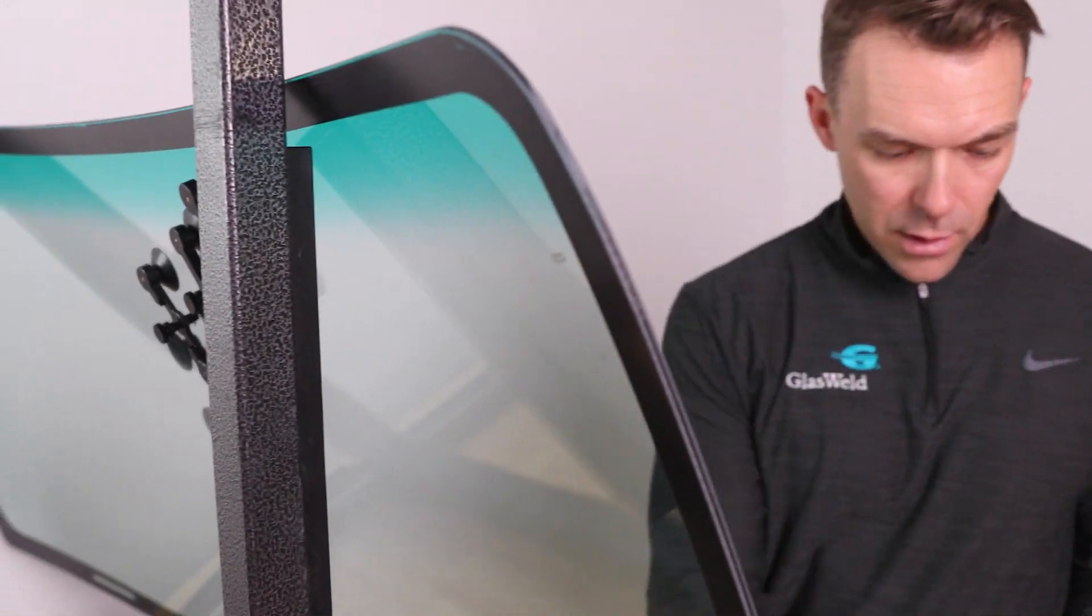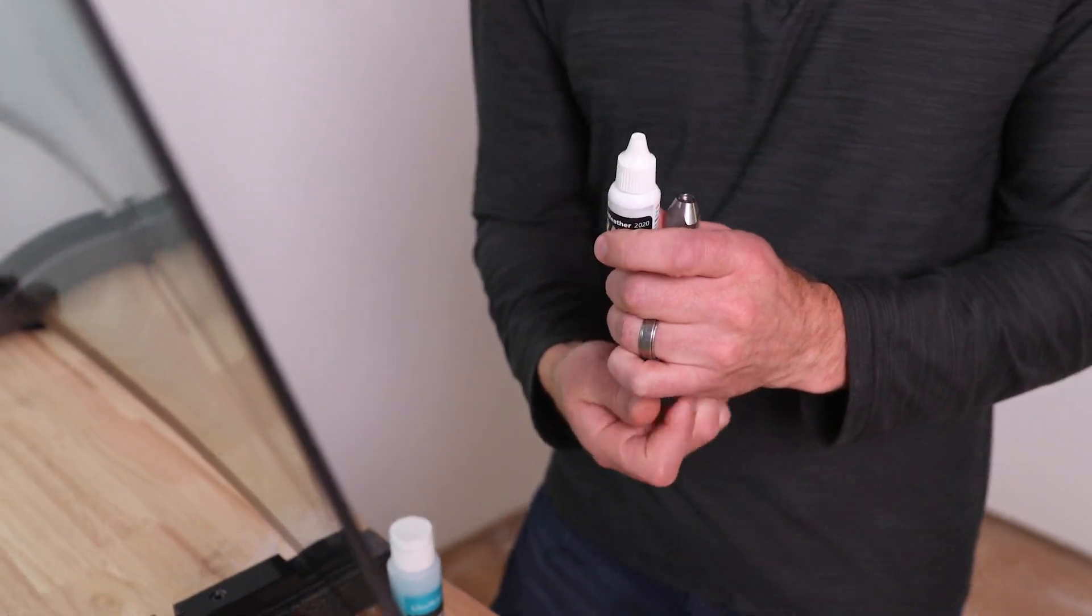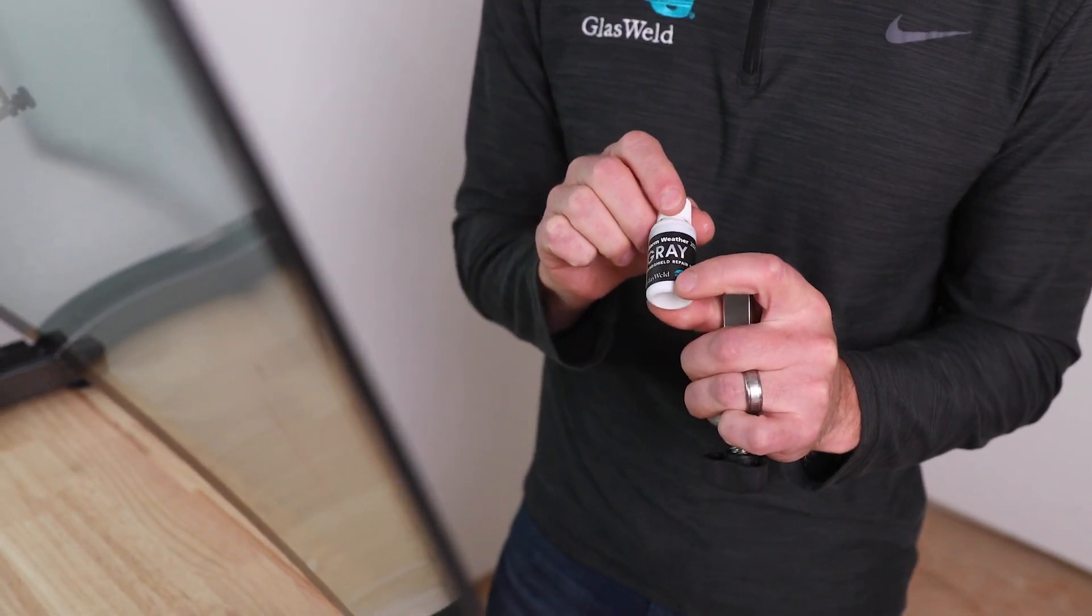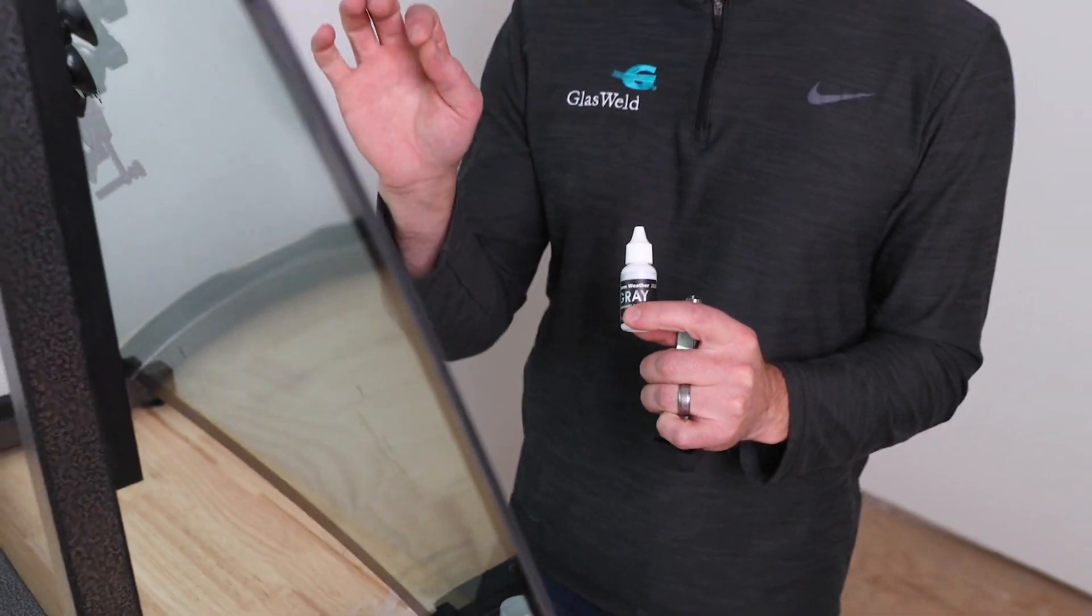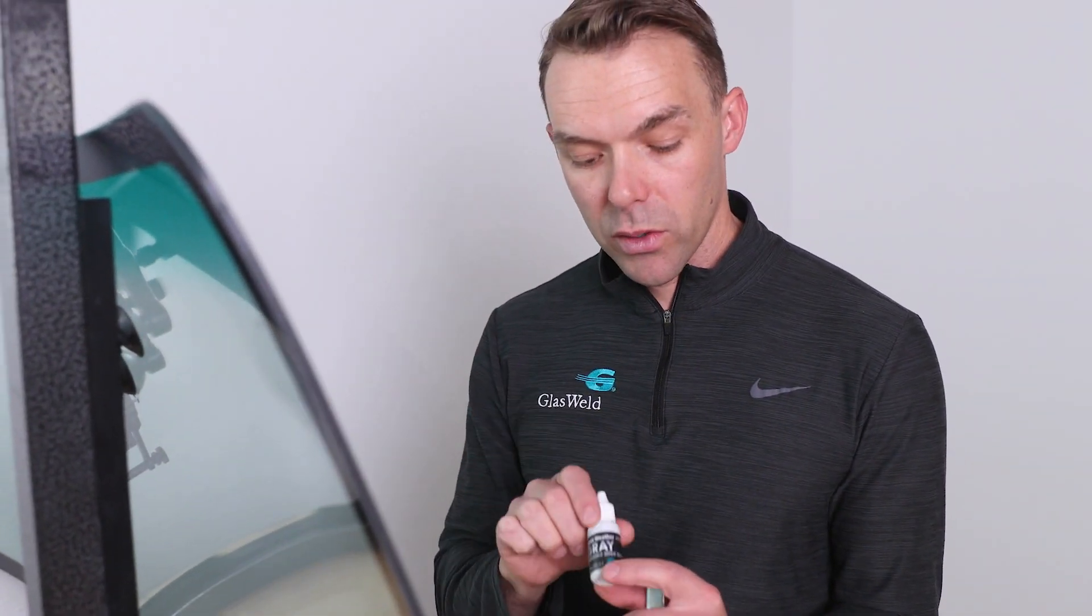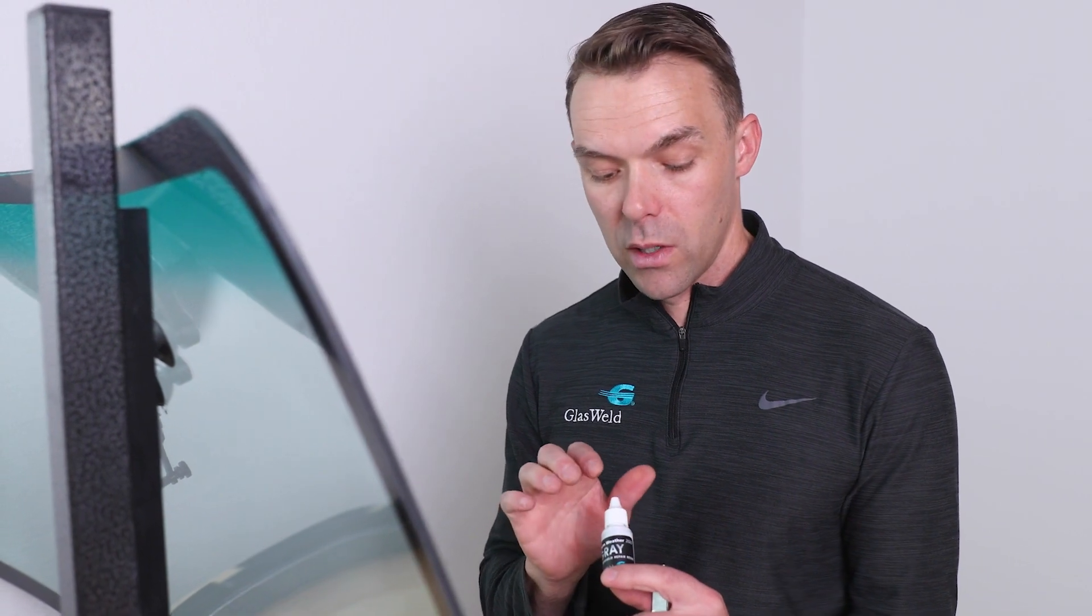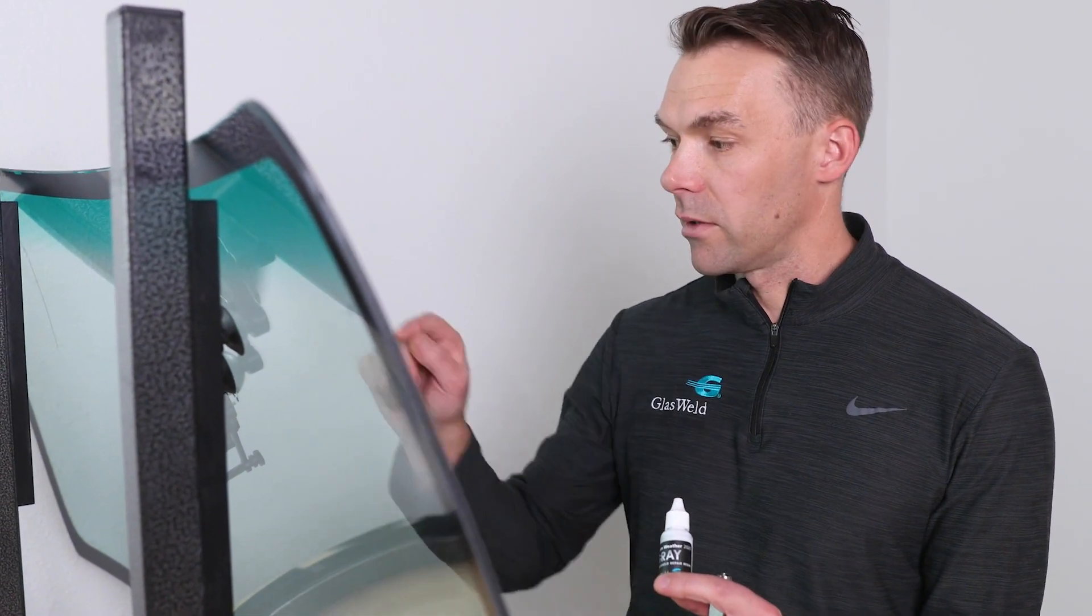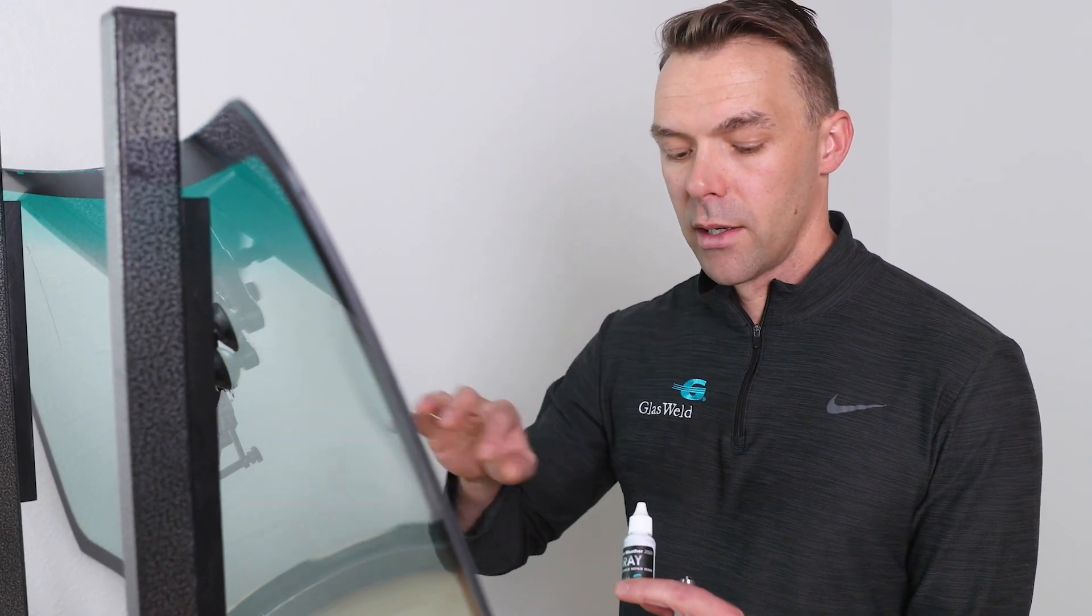All right, now we're going to load up our injector with about six to eight drops worth of resin. Now I'm going to choose the 2010 gray and I'm going to tell you why. The resin that we're going to use in the crack is gray as well, and so the 2010 gray is going to allow us to match the tint across the entire crack. It's also going to flow nicely in that initial break, so make the process go a little bit quicker.